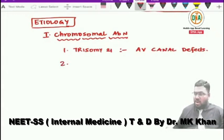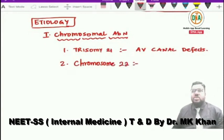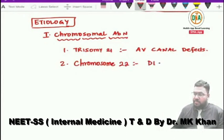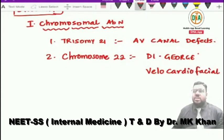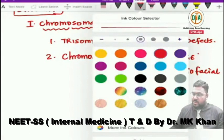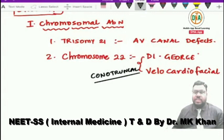Abnormalities of the long arm of chromosome 22 are associated with DiGeorge syndrome and velocardiofacial anomalies. These result in conotruncal defects. So: AV canal defects are seen in trisomy 21, while conotruncal defects are associated with chromosome 22 abnormalities.